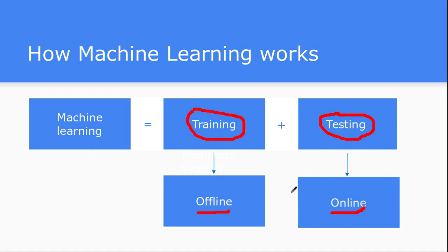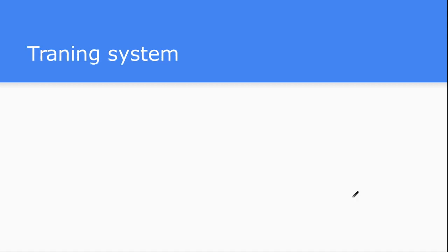What does offline and online mean here? Offline means that once you have a huge amount of data, you train on it and create a model from it. Whenever testing data is available, you feed it into the model and at runtime you decide what the predicted output or labels are. Generally, training happens in offline mode and testing happens in online mode.